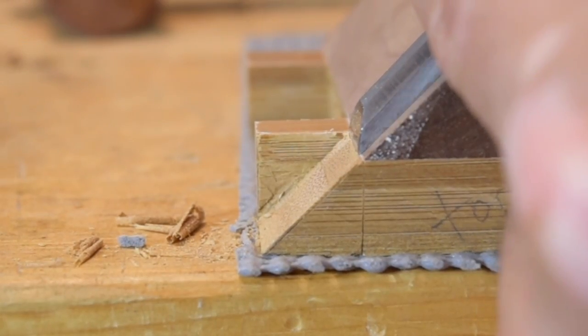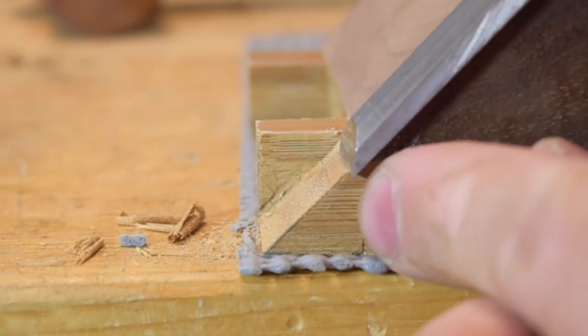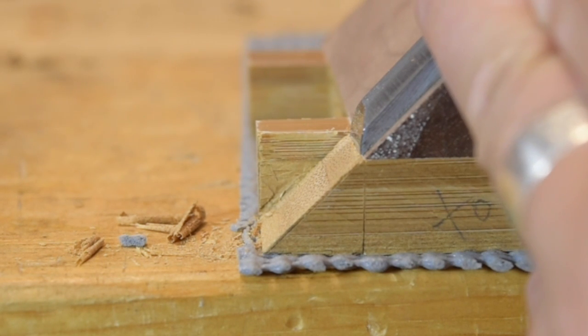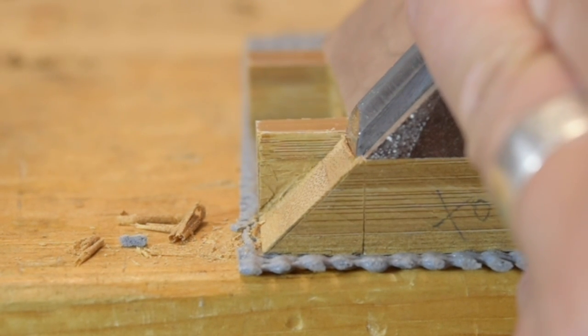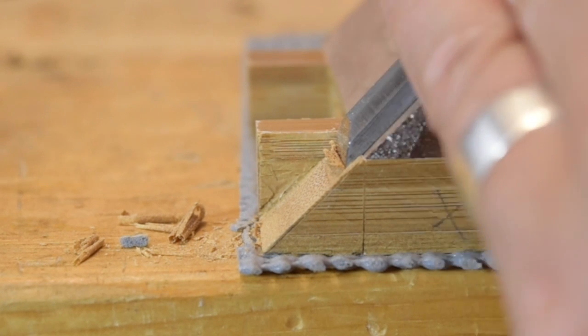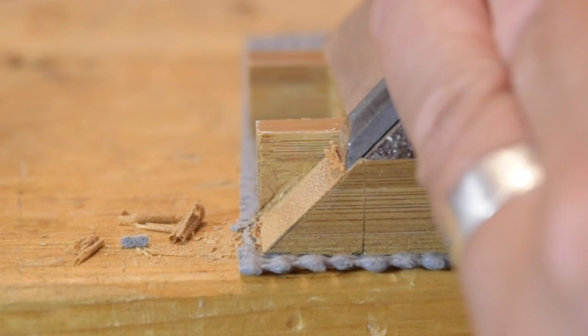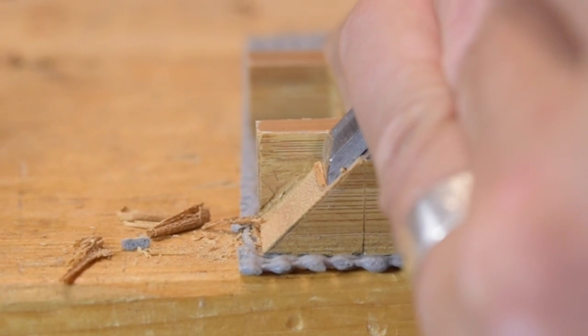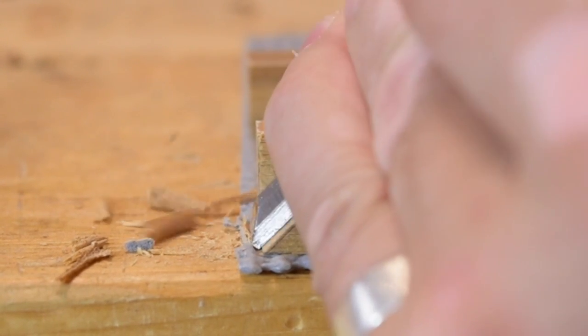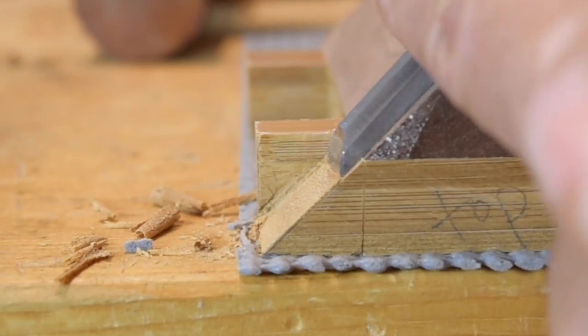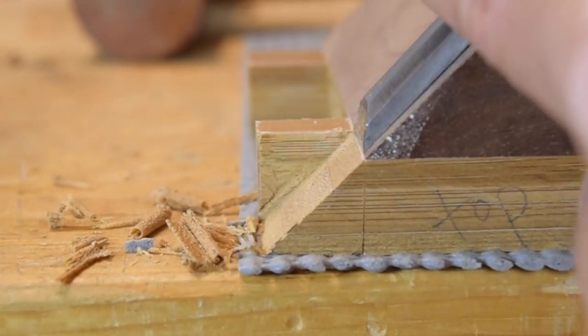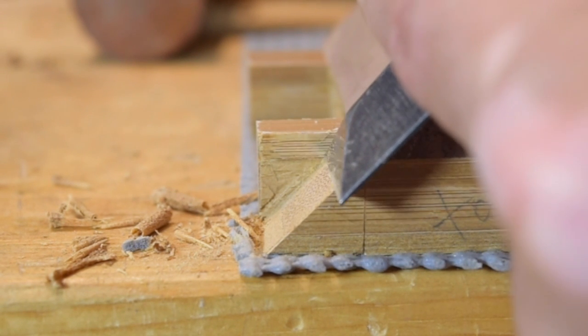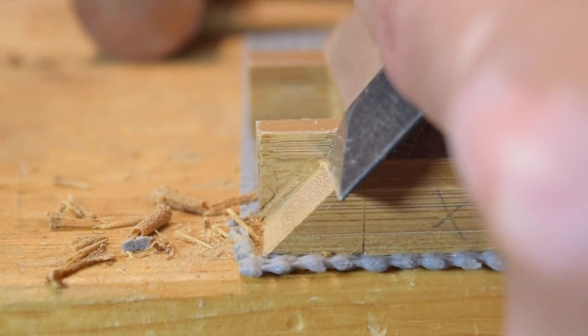Normally I would do this with a chisel that's much wider than this, but bamboo is actually a very difficult material to cut, so I'm resorting to using smaller chisels and taking just a little bit off at a time. For the final cut, just want to make sure that it's nice and flush.